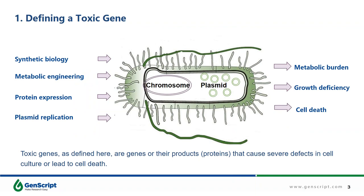E. coli is the most widely used host for synthetic biology, metabolic engineering, protein production, or plasmid replication. With the advent of the post-genome era, this bacterium is needed to express a growing number of genes originating from different organisms. Unfortunately, many of these genes severely interfere with the survival of E. coli cells — they tend to cause metabolic burden, cell death, or significant defects in bacterial growth. Therefore, a toxic gene is defined here as a gene or gene product that causes severe cultivation defects or cell death.